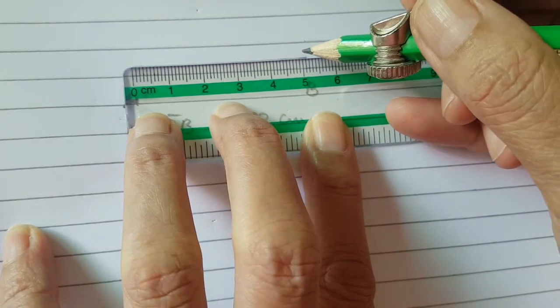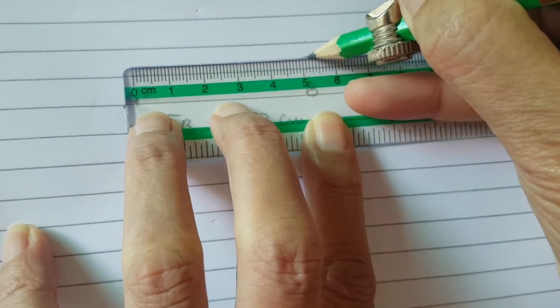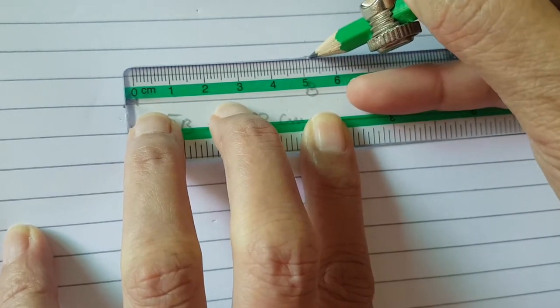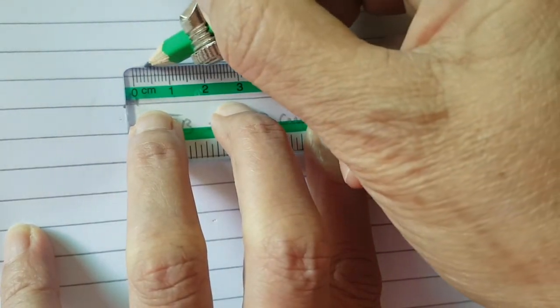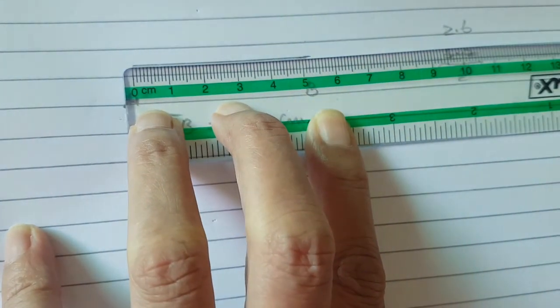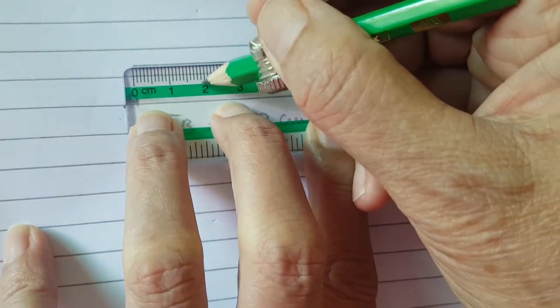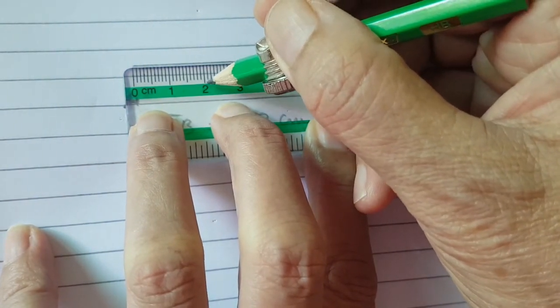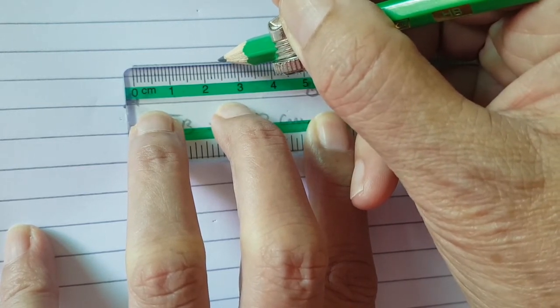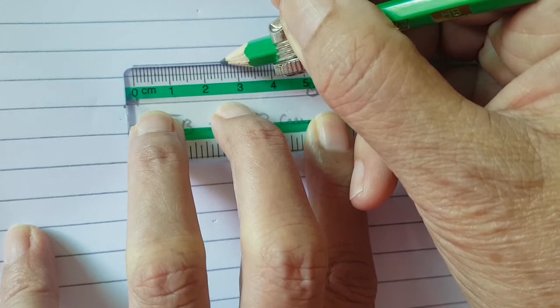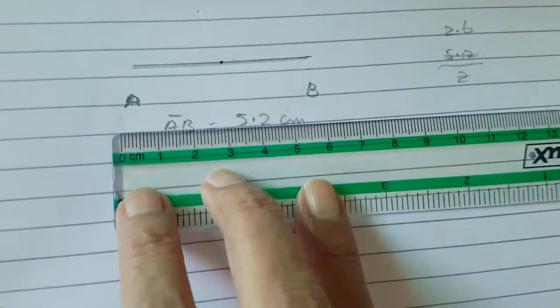It's 5.2, so the middle point of this line must be measuring 2.6. So 2 here is 2, and after 2 you will take 6 lines, so these are the 5 and 6 lines. This is the midpoint of the line measuring 5.2.